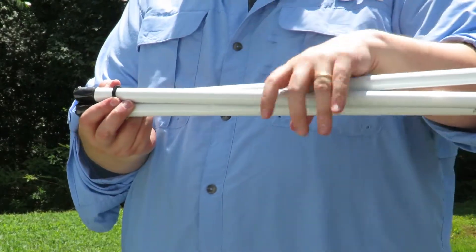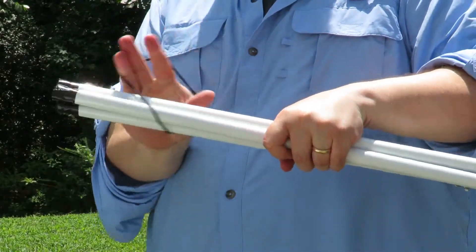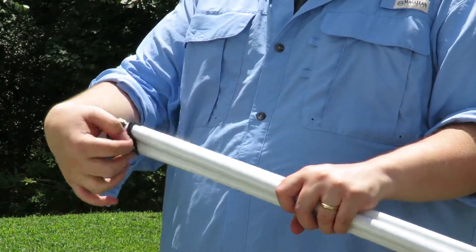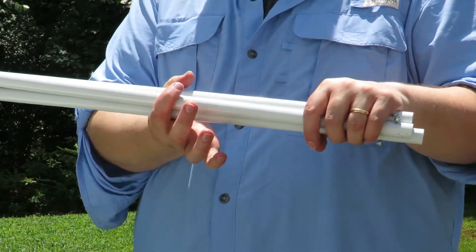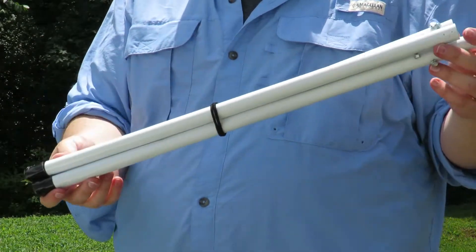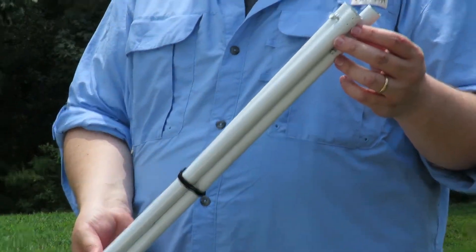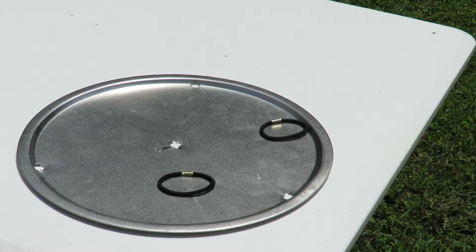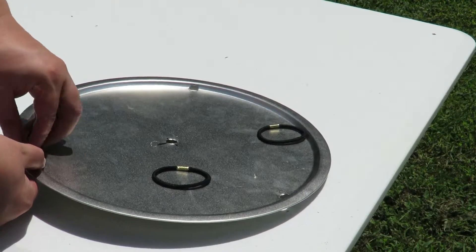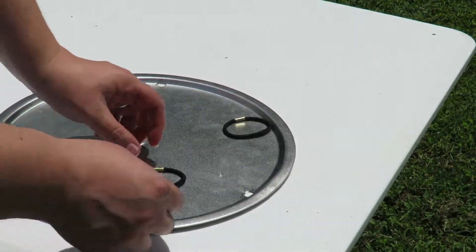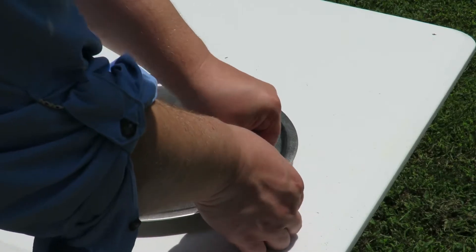Next, wrap an elastic band around all three poles and push it down to the center. The backpacking table is now ready to assemble. Simply slide an elastic band through each of the three holes on the side.